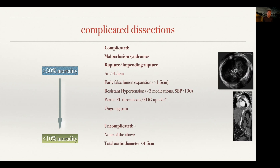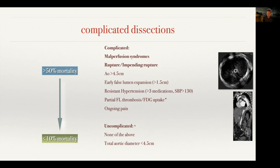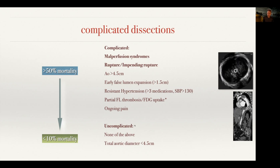Rupture or impending rupture is more of an imaging diagnosis. Rupture means blood in the mediastinum, hematoma, or large pleural effusion. Impending rupture is a softer sign — often patients with ongoing persistent pain. A large aorta greater than four and a half centimeters is not a complicated dissection but should be regarded as high risk, as should early false lumen expansion, resistance to blood pressure medication, partial false lumen thrombosis, and ongoing pain.